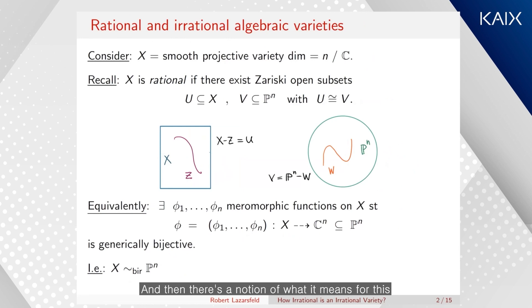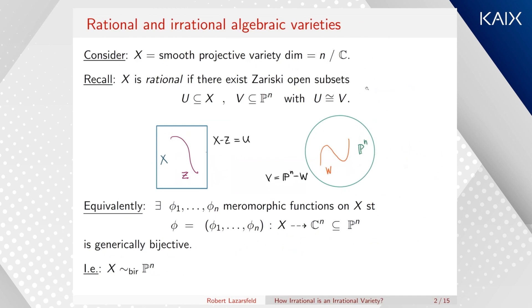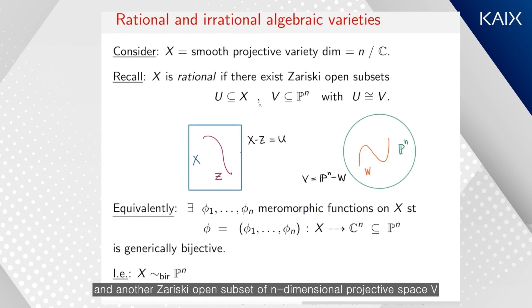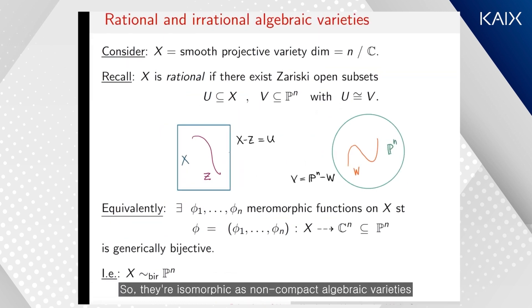And then there's a notion of what it means for this algebraic variety to be rational. So let me state the definition and then I'll explain it. So one says that X is rational if you can find Zariski open subsets U in X and another Zariski open subset V of n-dimensional projective space, with the property that U is isomorphic to V as open algebraic varieties.